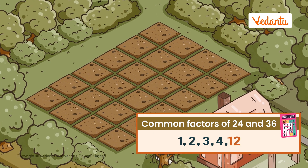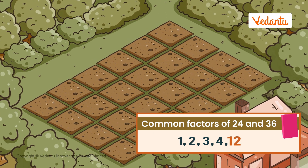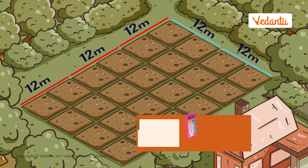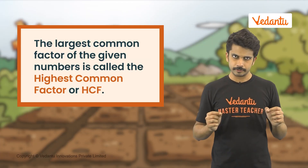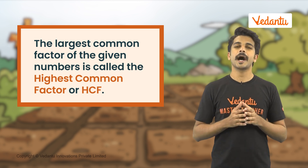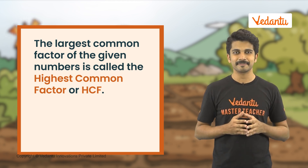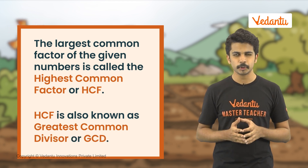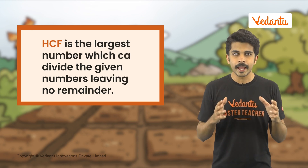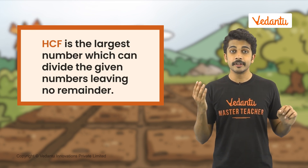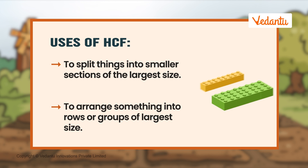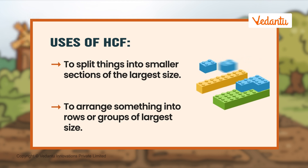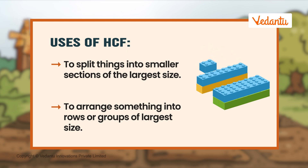We can also see that 12 is the greatest number that is a factor of both 24 and 36. So the 12-meter stick is the longest stick which we can use to measure both the length and the breadth of the farm. The largest common factor of the given numbers is called the highest common factor or HCF. HCF is also known as the greatest common divisor or GCD. We can also say that HCF is the largest number which can divide the given numbers leaving no remainder. The HCF can be used to split things into smaller sections of the largest size or to arrange something into rows or groups of largest size.